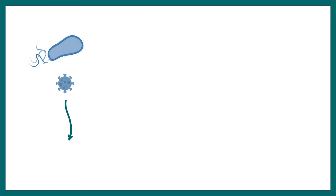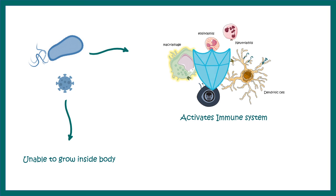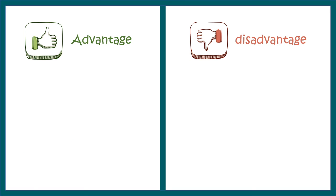In general, live attenuated vaccines are unable to grow in the body, but they raise an alarm to the immune system, informing it about an upcoming infection and giving it enough time to prepare. So if any infection happens in the future, the immune system is fully prepared to respond.